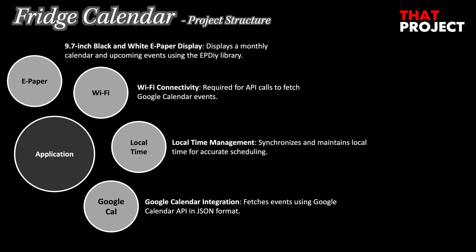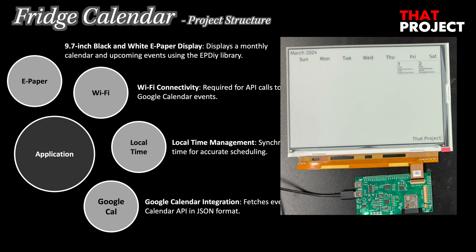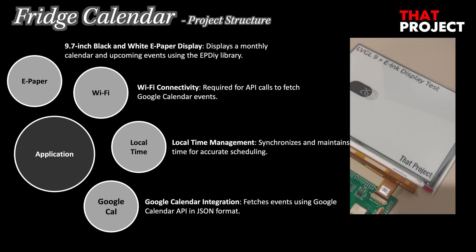The ePaper used in this project is a 9.7-inch, 1200x825, 150 ppi product — I need a large display to see the entire schedule for this month. The board used to drive this was ePDIY version 7. This board helps to easily connect many ePaper displays and enables effective screen updates using the ePDIY library. This can also be used in AirVisual projects, making it very effective hardware for ePaper projects.